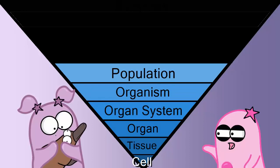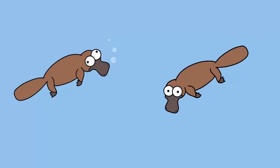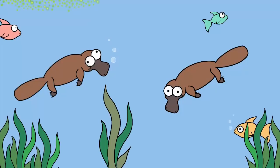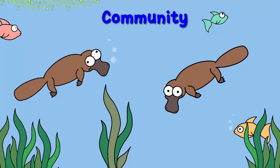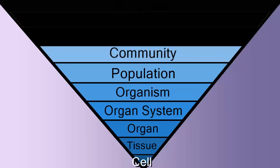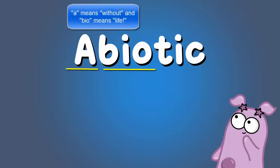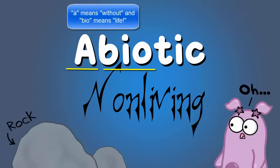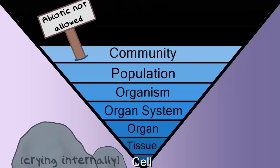But include other populations, such as fish, algae, and plants, along with the platypi, and now you have a community. A community includes many populations, but it does not include abiotic factors. Abiotic factors are factors that are non-living, like rocks. Abiotic factors are not considered in the community level, just biotic factors. Biotic factors, on the other hand, are living.